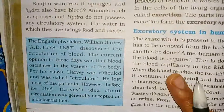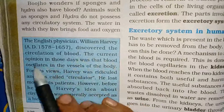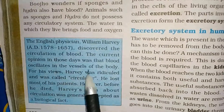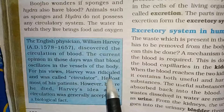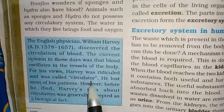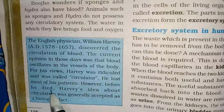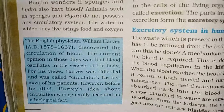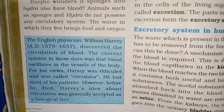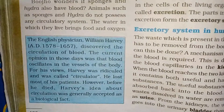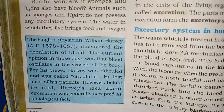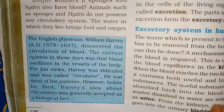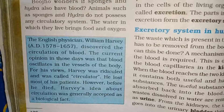The English physician William Harvey discovered the circulation of blood. The current opinion in those days was that blood oscillates in the vessels of the body. For his views, Harvey was ridiculed and was called a 'circulator'. He lost most of his patients. However, before he died, Harvey's idea about circulation was generally accepted as a biological fact. Blood circulation ko discover kisne kiya tha? English physician William Harvey ne.